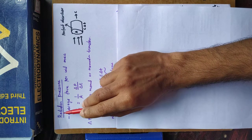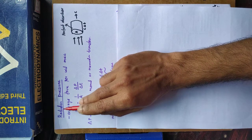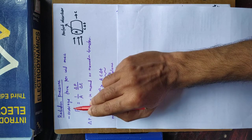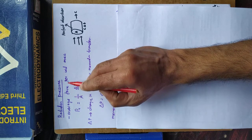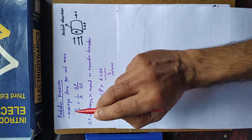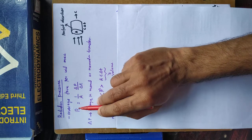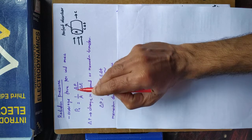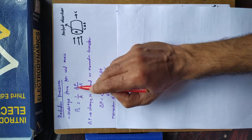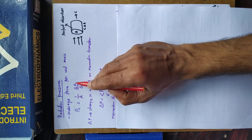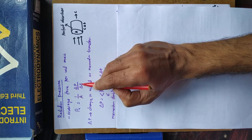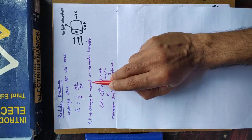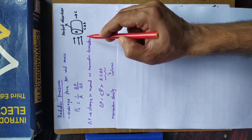Next, I want to discuss electromagnetic radiation pressure. Electromagnetic radiation pressure is defined as the average force per unit area, PR. Radiation pressure PR is force per area. Force is rate of change of momentum, delta P divided by delta T, divided by A, where delta P is the change in momentum or momentum transfer.